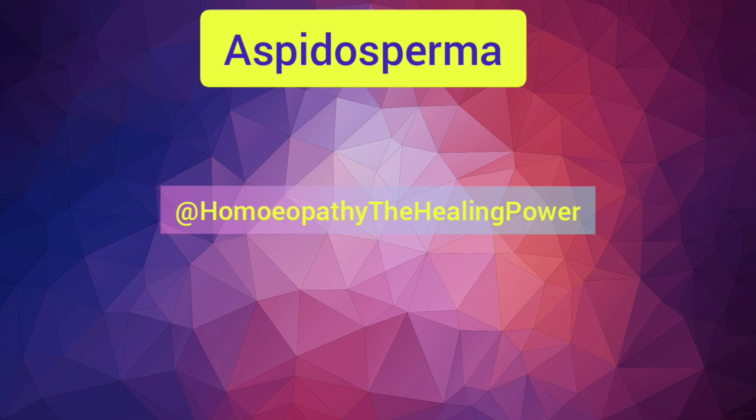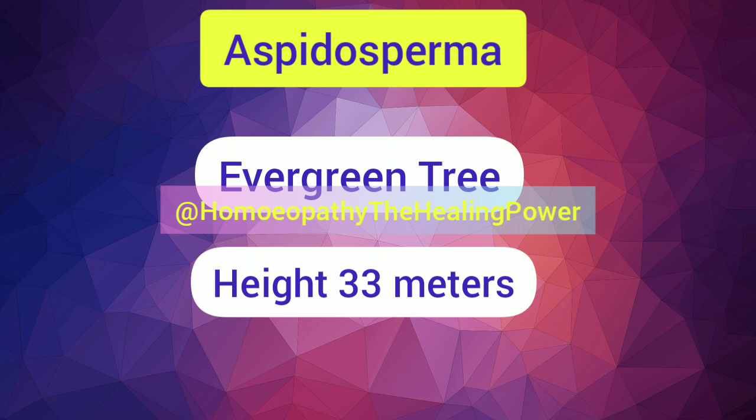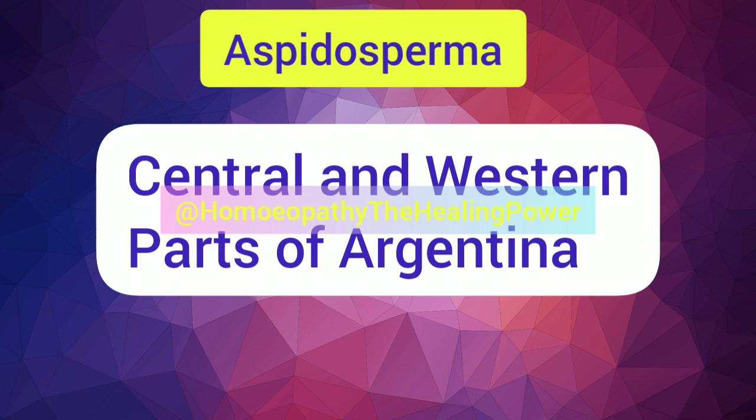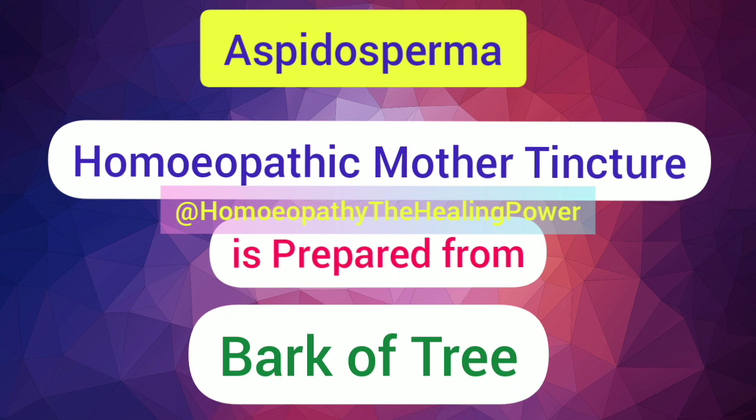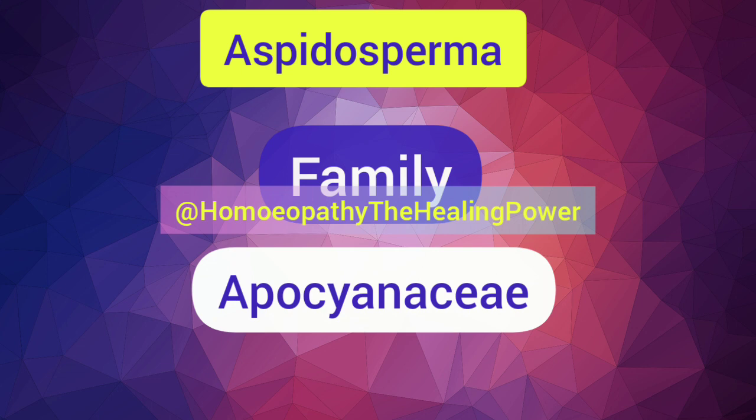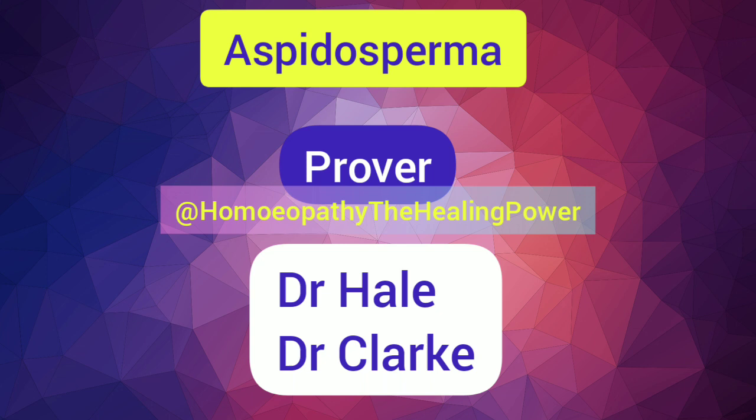Aspidosperma quebracho is an evergreen tree with a height of up to 33 meters, generally found in the central and western parts of Argentina. The homeopathic mother tincture is prepared from the bark of the tree. Aspidosperma belongs to the family Apocynaceae, with the common name quebracho. It was proved and introduced in homeopathy by Dr. Hale and Dr. Clarke.